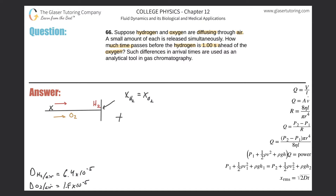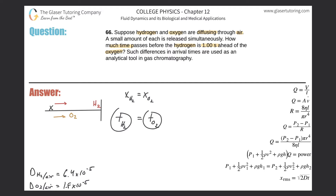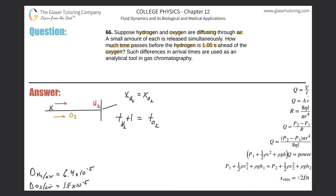Now we can start framing that as an equation relating time. The times both items reach this location are not equal. The time H₂ takes to travel to this location, plus one second, will equal the time O₂ takes to reach this point. Hydrogen's time is shorter; oxygen's time is longer by one second. So if I take hydrogen's time and add one, I get oxygen's time.